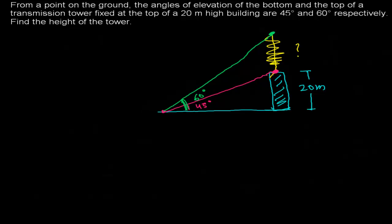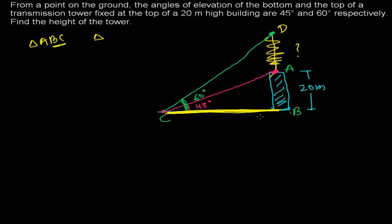Here I have two right-angled triangles. One is right-angled triangle ABC, and another right-angled triangle is DBC. The common element in both triangles is the base BC. In triangle ABC, BC comes here, and in triangle DBC, BC is also there — so BC is common to both. This is our hint to solve the question.